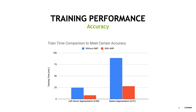To further study the training performance, we compare the training time to meet certain validation accuracy, and we set up two target accuracies for different tasks. For left atrium segmentation, the target validation accuracy is a Dice score of 0.89. The target accuracy for spleen segmentation is a Dice score of 0.91. We can see from the figure that to achieve these target accuracies, training with AMP takes much less time than training without AMP — the training time with AMP is two times shorter.